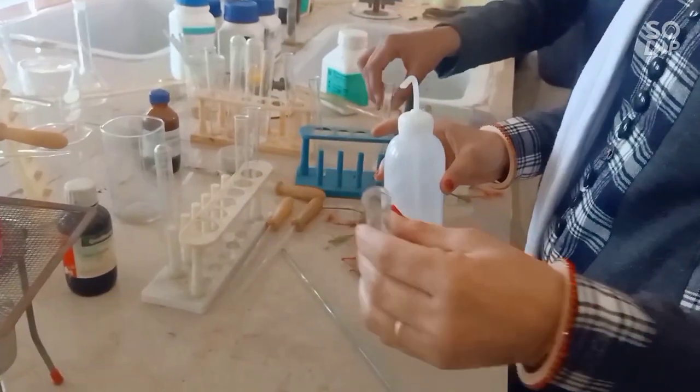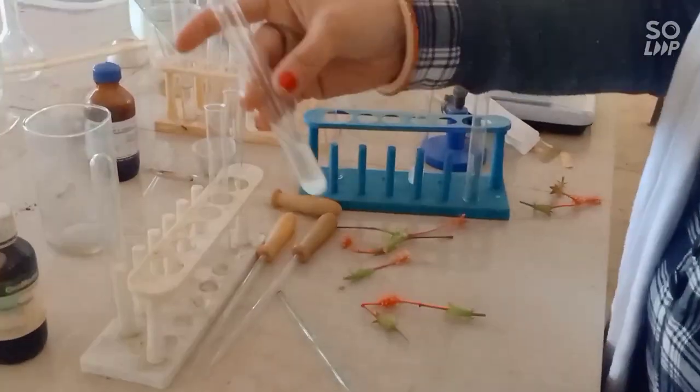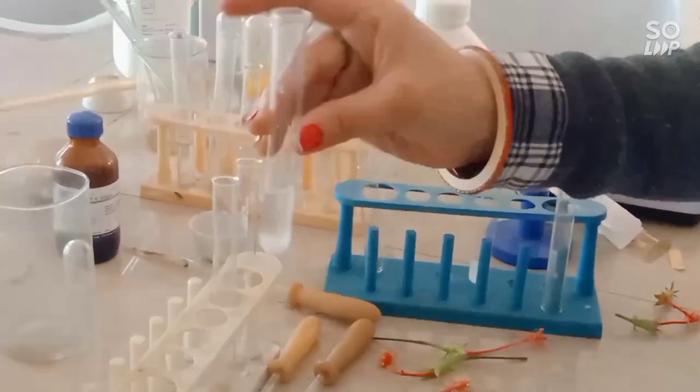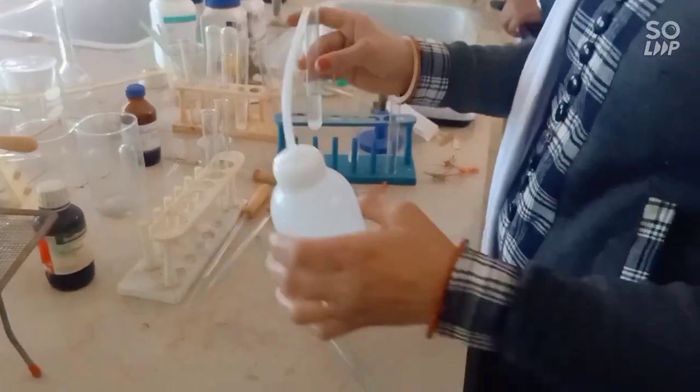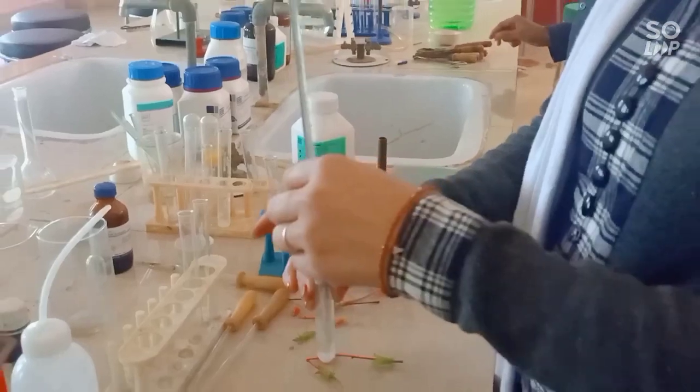Here we are preparing an acidic solution. I have the dry powder of hydrochloric acid and add some distilled water in it to make a solution so that we can get an acidic solution.